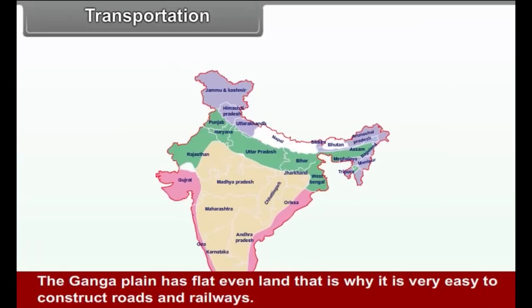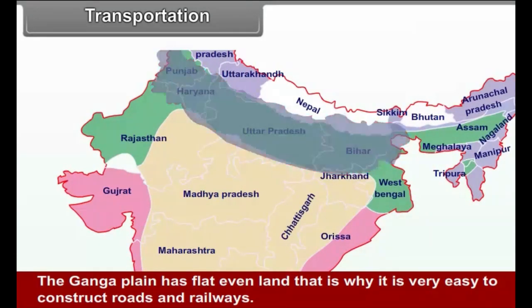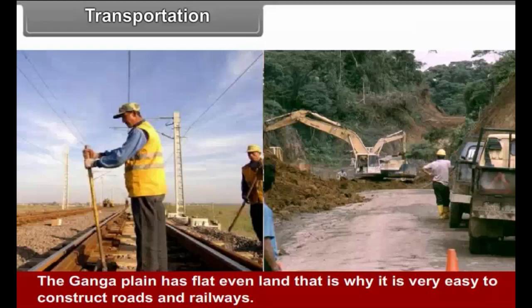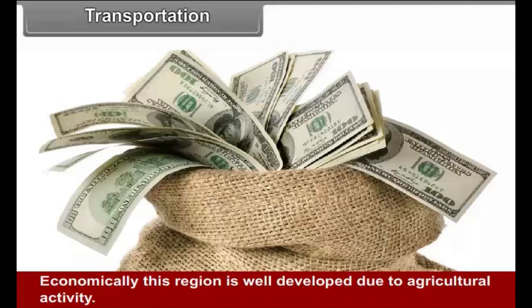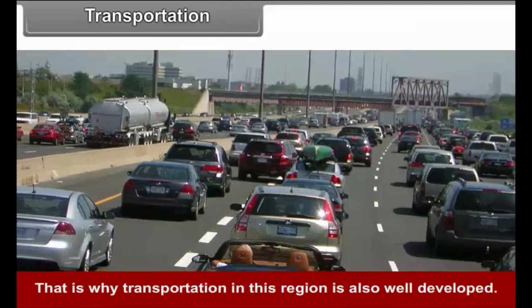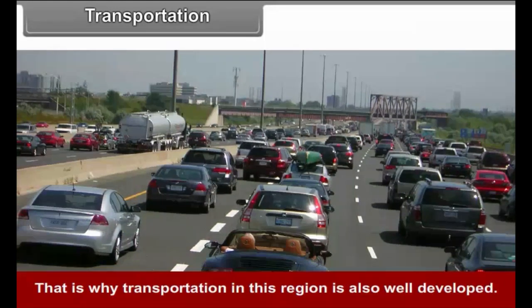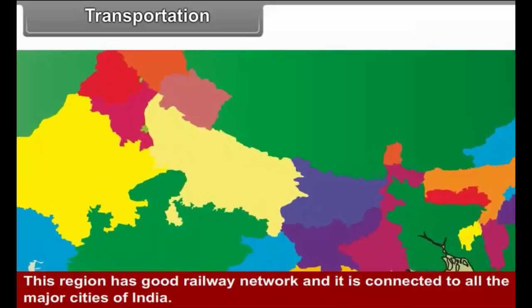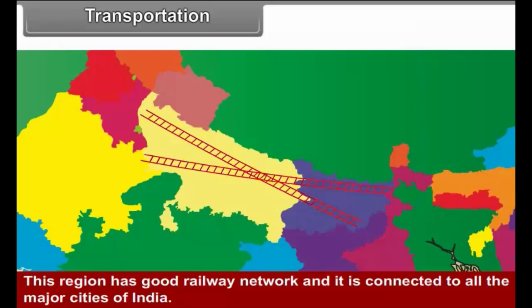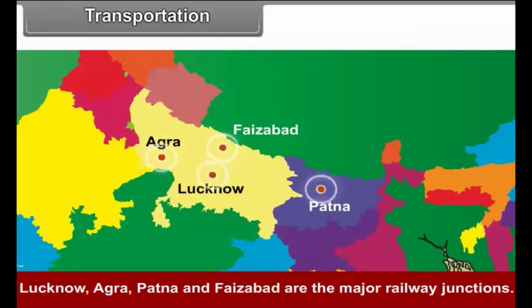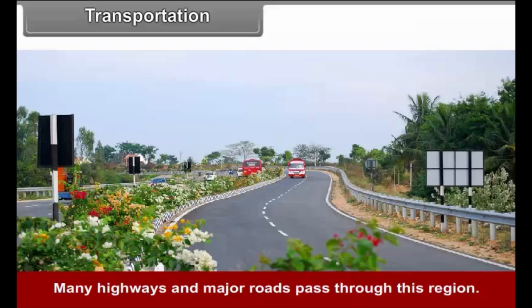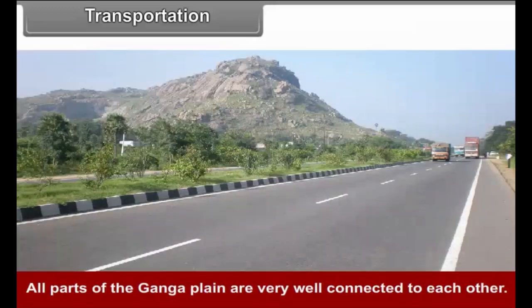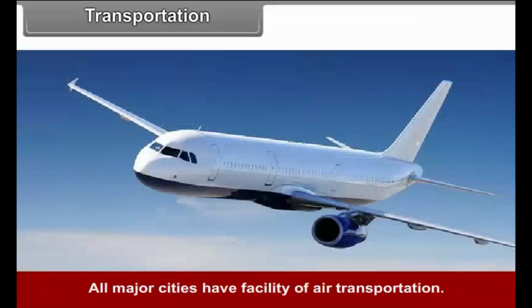Transportation. The Ganga Plain has flat, even land, making it very easy to construct roads and railways. Economically, this region is well developed due to agricultural activity, and transportation is also well developed. This region has a good railway network and is connected to all the major cities of India. Lucknow, Agra, Patna and Faizabad are the major railway junctions. Many highways and major roads pass through this region. All parts of the Ganga Plain are well connected to each other and all major cities have facilities of air transportation.